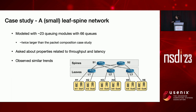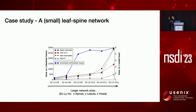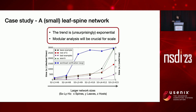We also did a case study on a small leaf-spine network — about twice the size of the composition example — asking about throughput and latency, with similar trends in search time, verification time, and total time. We also examined scaling by increasing network size: the runtime trend is exponential, which is expected for tools like this. Going forward, modular analysis is going to be very crucial for scaling this approach.